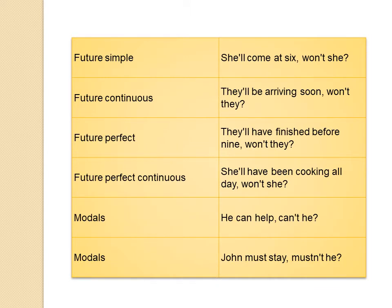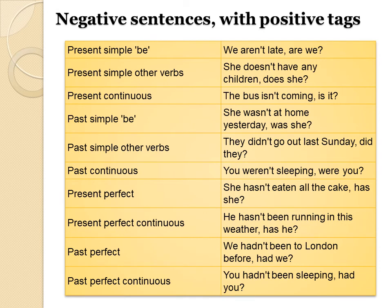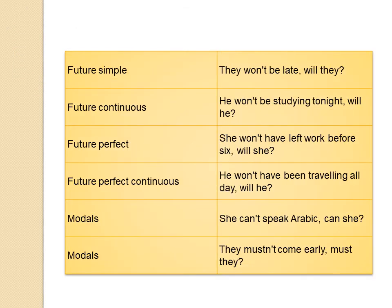This is the second part of the example of question tag — positive sentences where the tag becomes negative. In the same way, if the sentences are in negative, the tag becomes positive. Here also I have given examples according to the different tenses, please go through them. This is the second part of the same — negative sentence and the tag becomes positive.